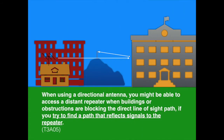Directional antennas radiate with more power by focusing the energy in one direction and also have more gain for reception. For the exam, when using a directional antenna you might be able to access a distant repeater when buildings are obstructing your path or blocking the direct line of sight, if you try to find a path that reflects signals to the repeater.